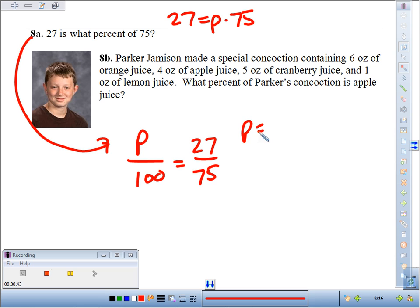If you look at 8b, Parker Jameson made a special concoction containing 6 ounces of orange juice, 4 ounces of apple juice, 5 ounces of cranberry juice, and 1 ounce of lemon juice. What percent of the concoction is apple juice? We need to know how much total juice there is.